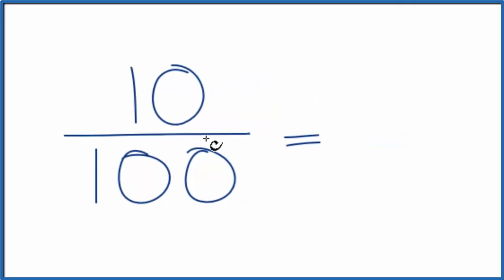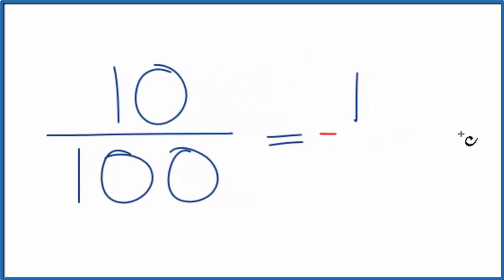So if we divide the numerator 10 by 10, we get 1. And then if we divide the denominator 100, we divide this by 10, we'll get 10. So when we simplify the fraction 10/100, we get 1/10. These are equivalent fractions.